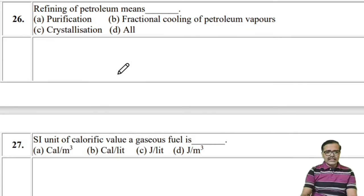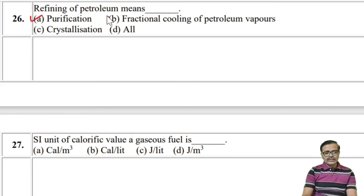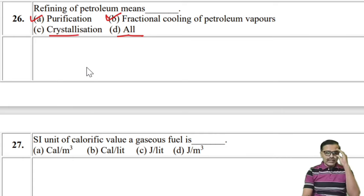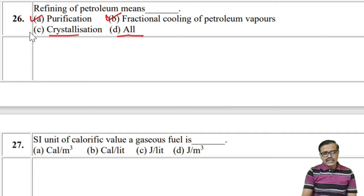Refining of petroleum means purification. Options include fractional cooling of petroleum vapors and crystallization. Crystallization is not part of refining — vapors are converted into liquid, no crystal formation occurs. So C (crystallization) is wrong. Between A (purification) and B (fractional cooling), B is more correct. So option B — fractional cooling — is the answer.